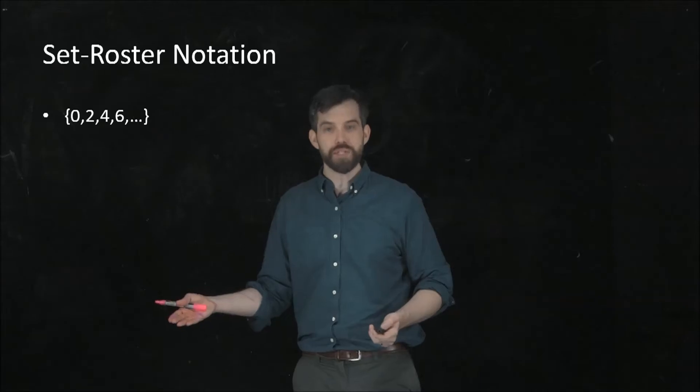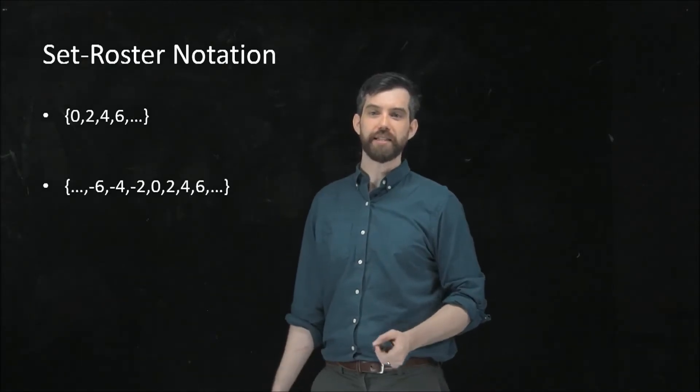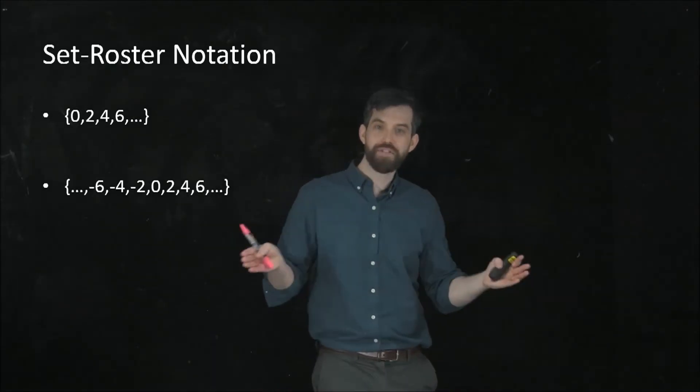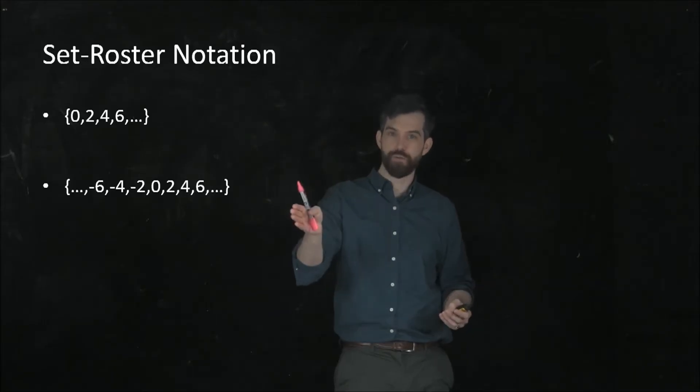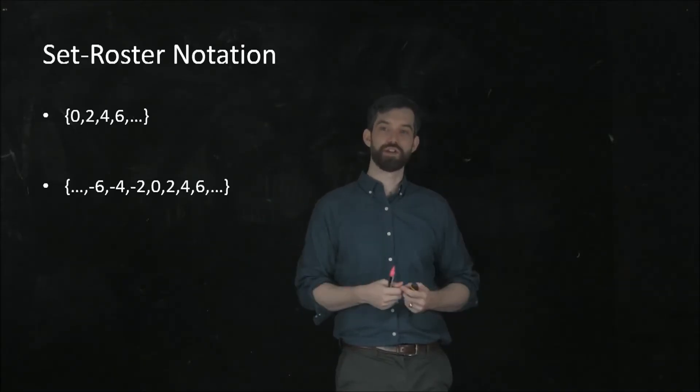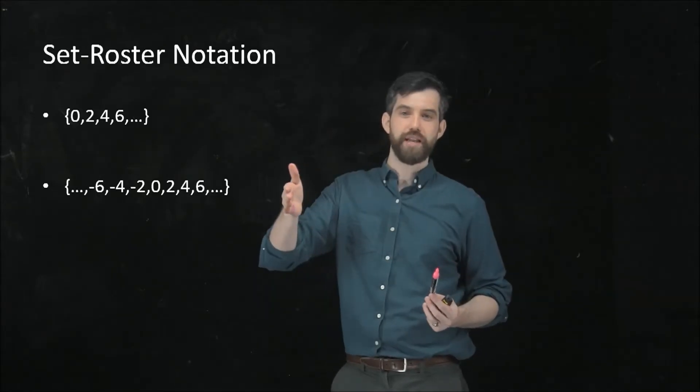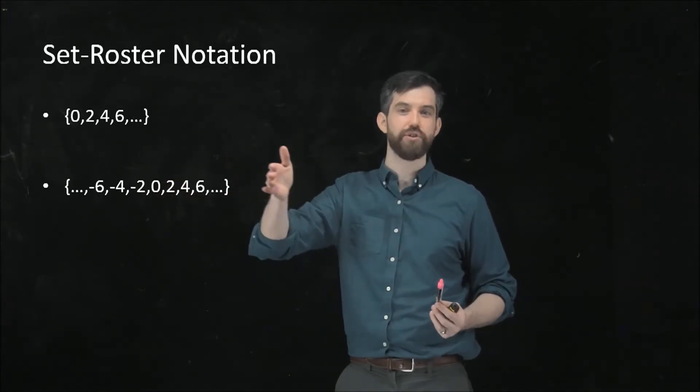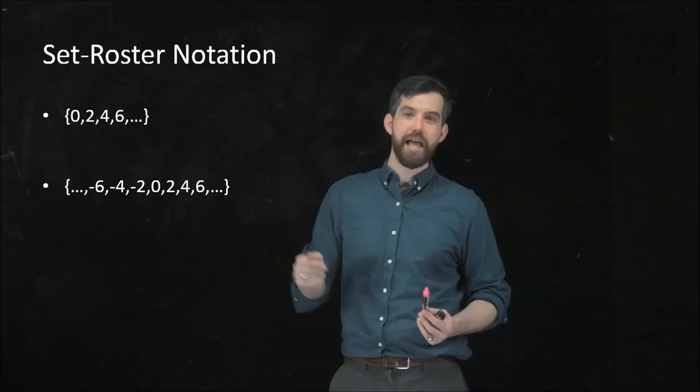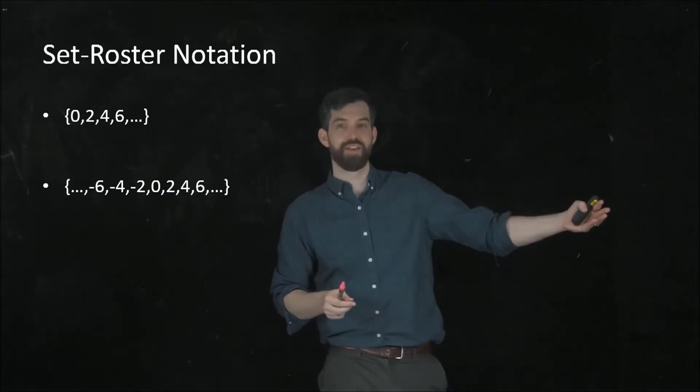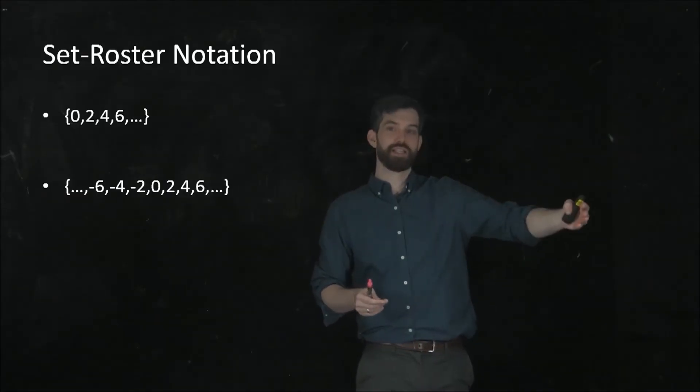We can do the dot dot dot on both sides. For example, in this example, this is all of the even integers, not just the positive ones. And in this case, they have a pattern that goes in the negative infinity direction, minus 2, minus 4, minus 6, and so on. And a pattern that goes in the positive infinity direction, 2, 4, 6, and so on.